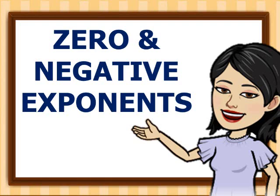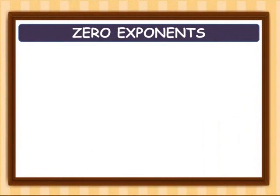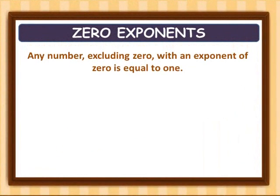This morning, you're going to learn about zero and negative exponents. Let's have first the zero exponents. Any number excluding zero with an exponent of zero is equal to one. Let's have the first example.